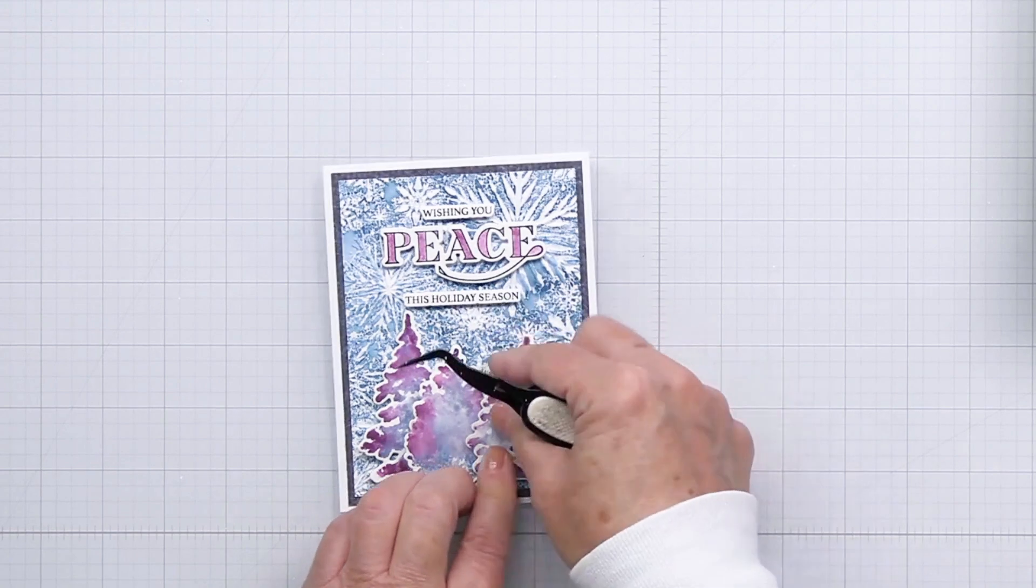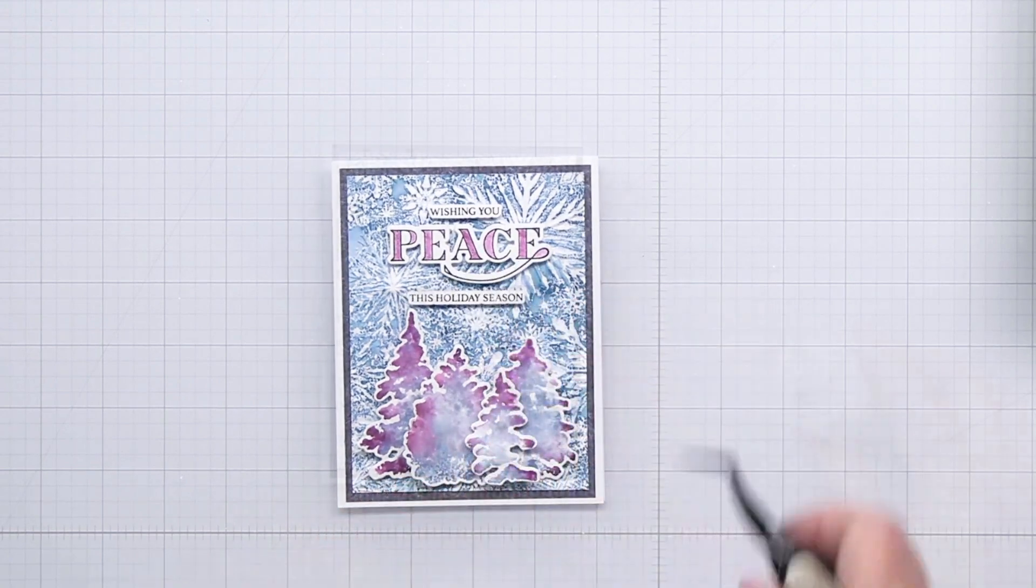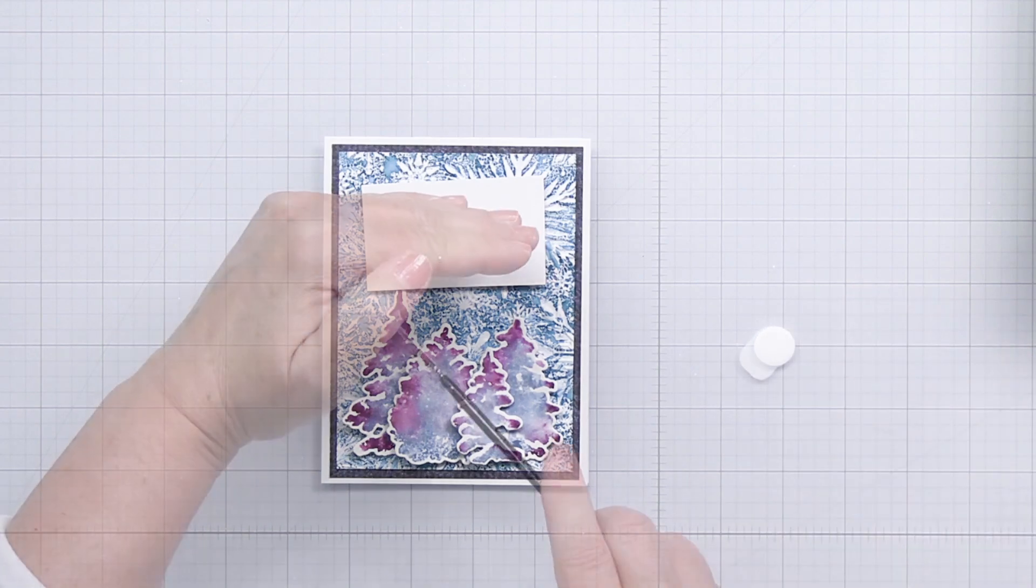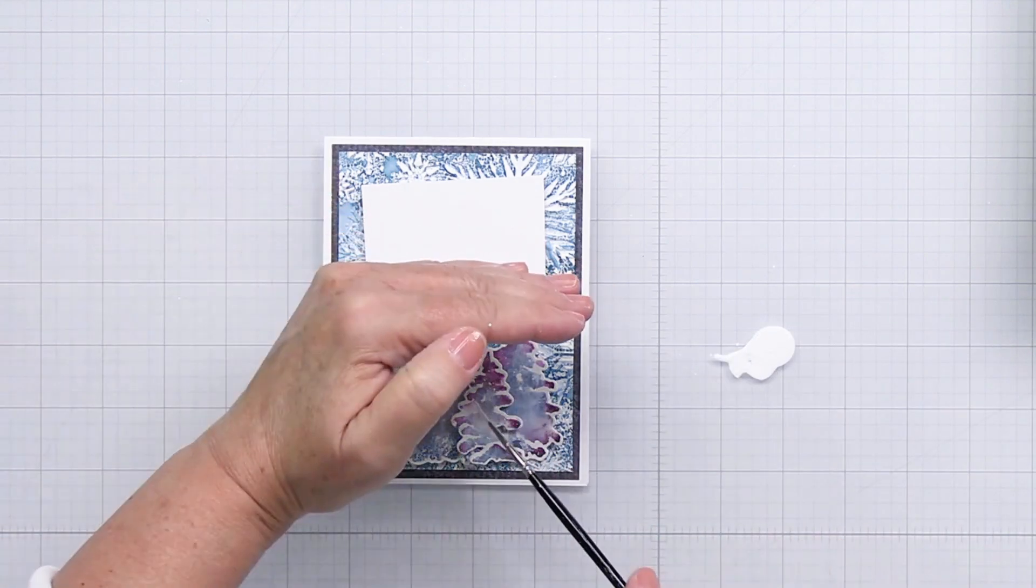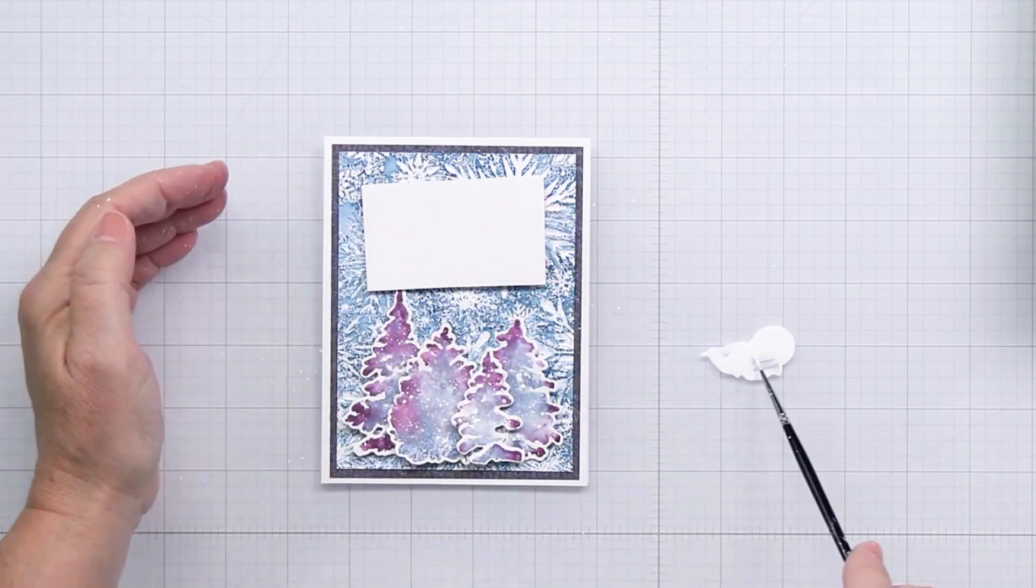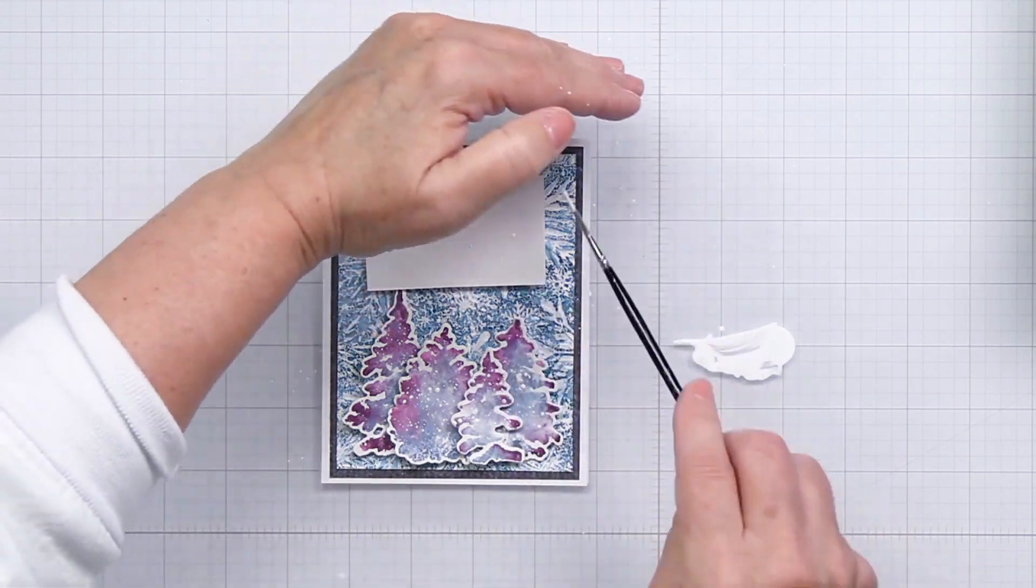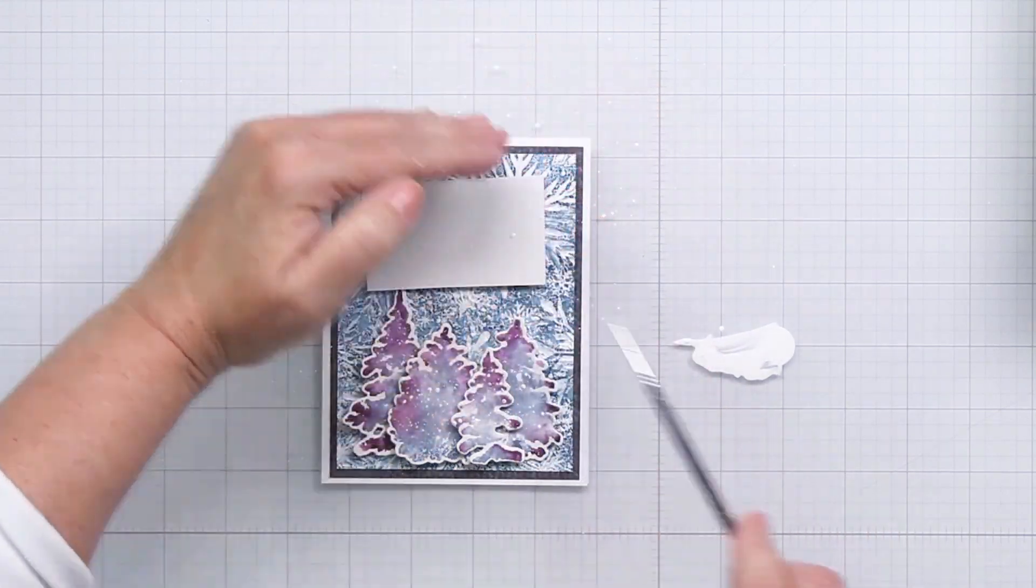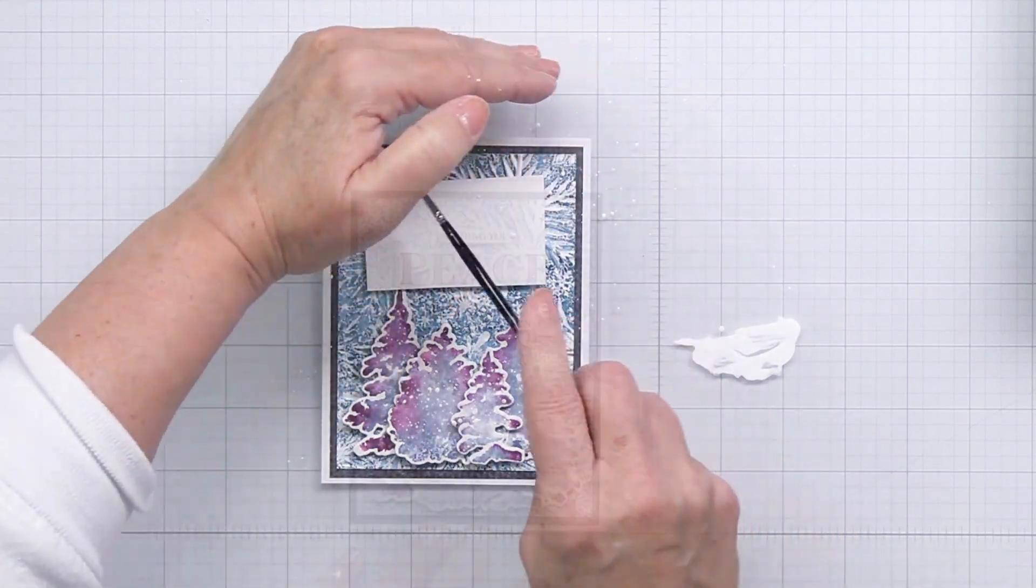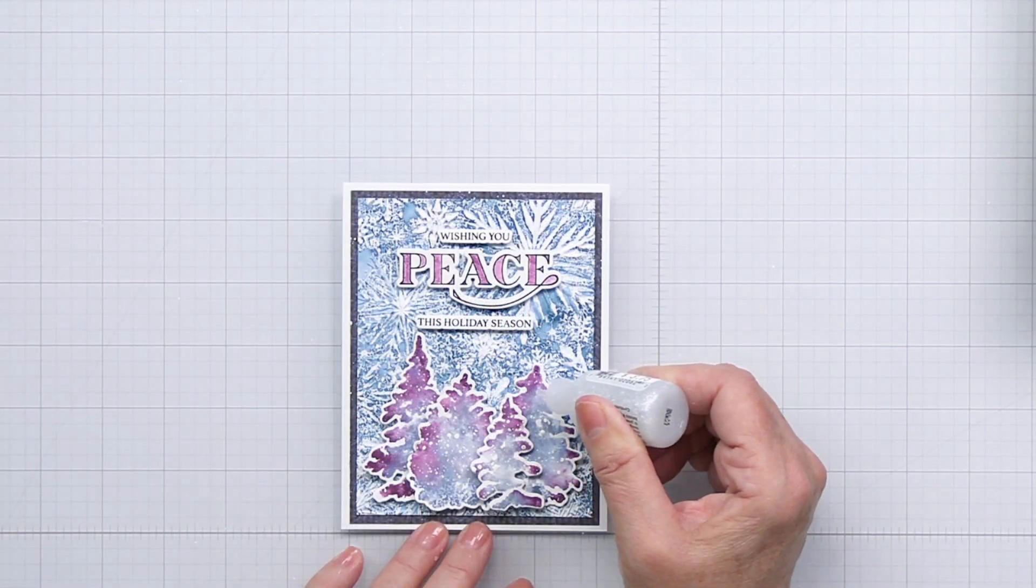I'm going to use some Dina Wakely white gloss spray now and add a little splatter of some snow with this white acrylic paint. I'm just using a fine brush to get a combination of some really fine white splatter and some larger splatter spots as well.